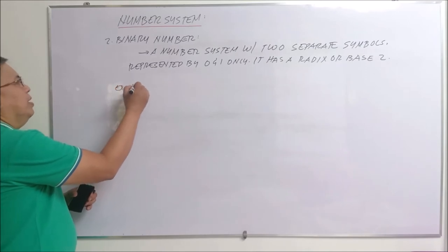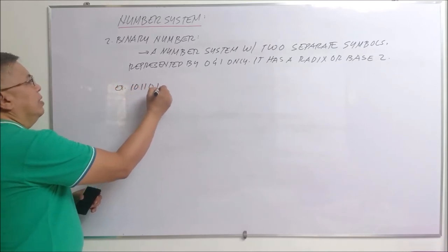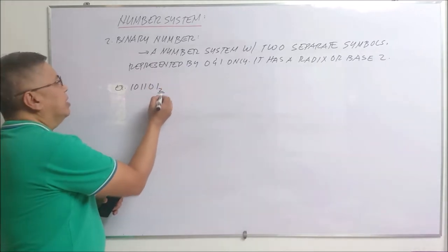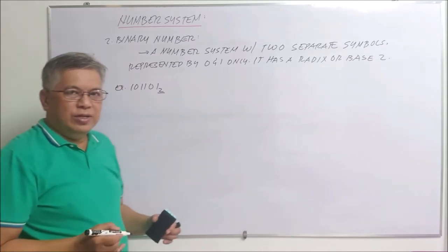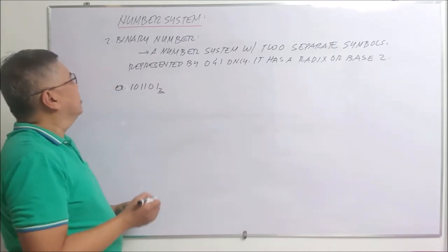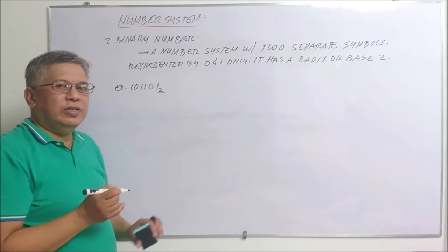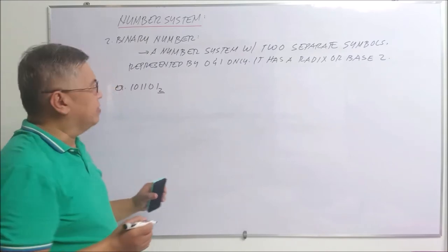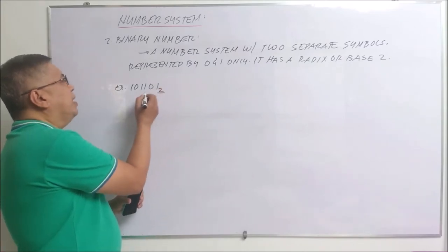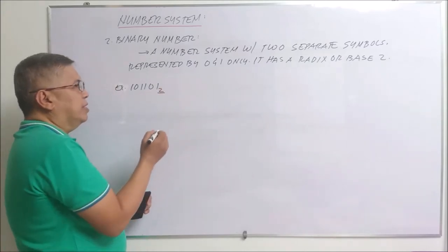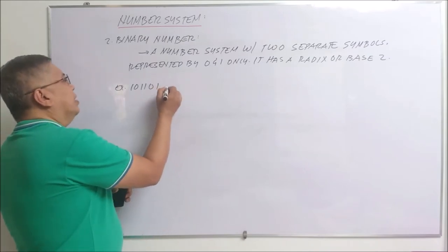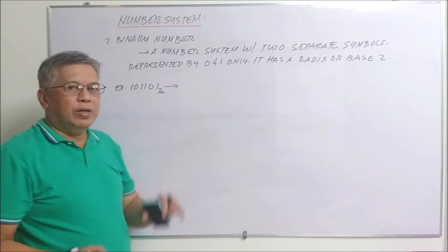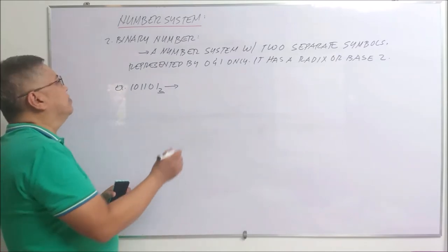For example, take the number 101101 base two. The subscript two here is called the radix or the base. The radix or base identifies the type of number system we are using. In this case, we have a binary number — 'bi' meaning two. So how do we obtain the positional notation of this particular binary number?